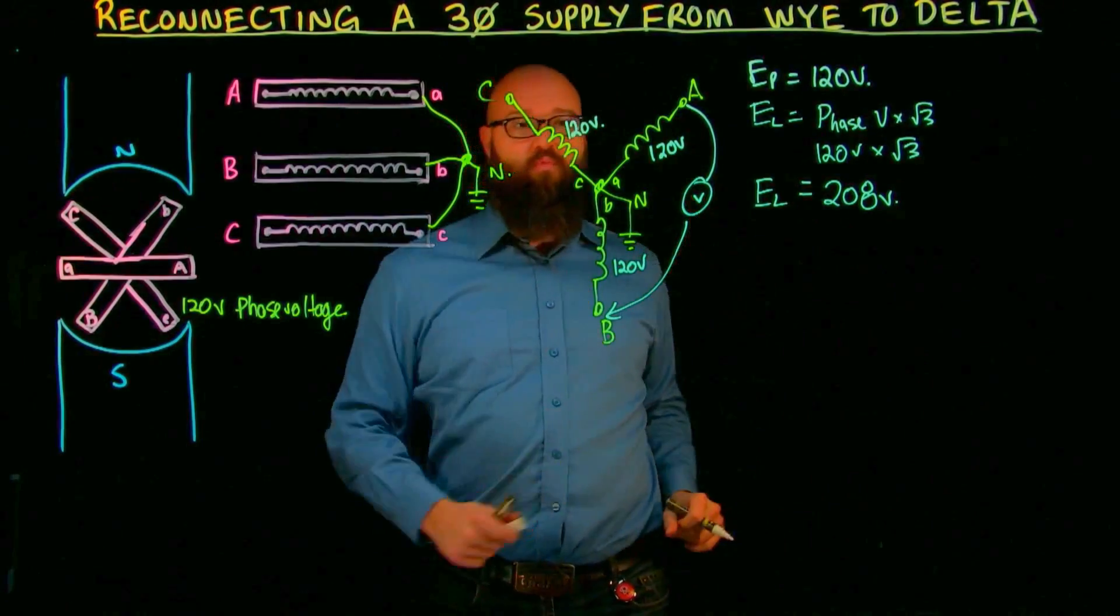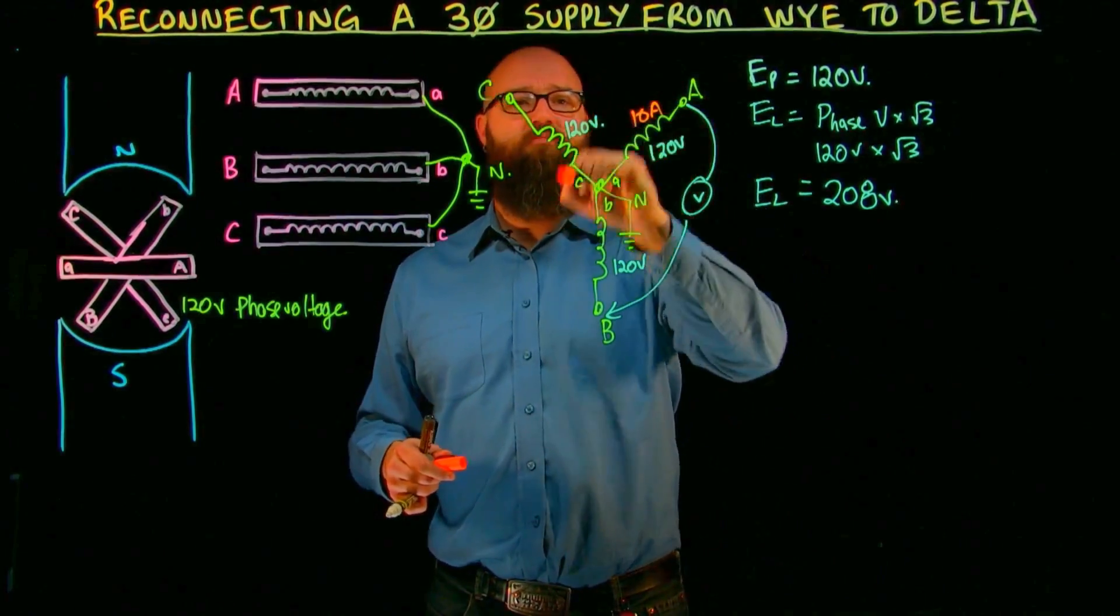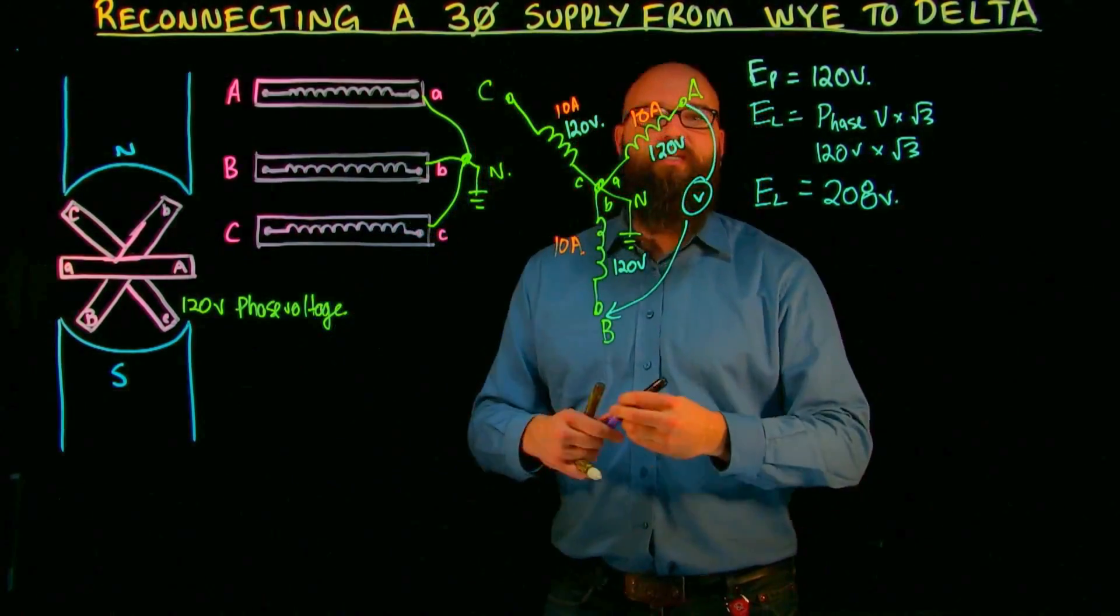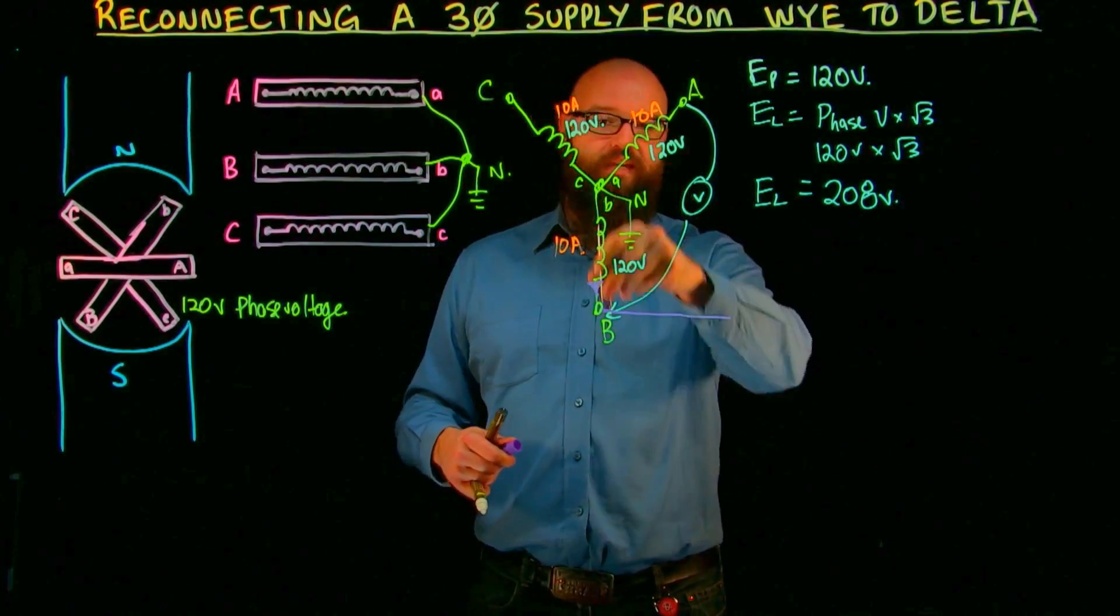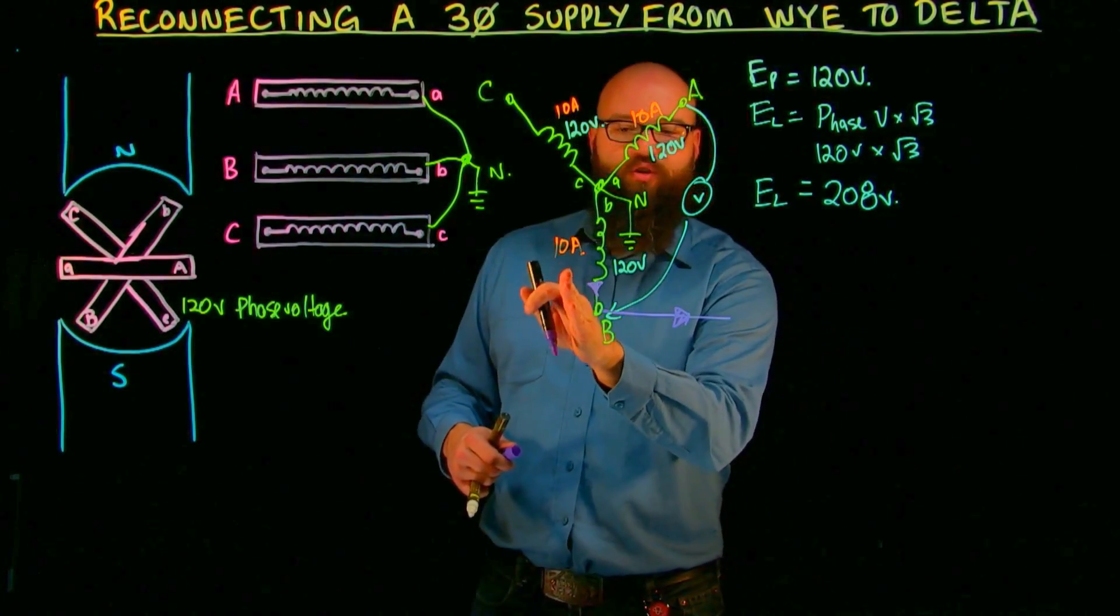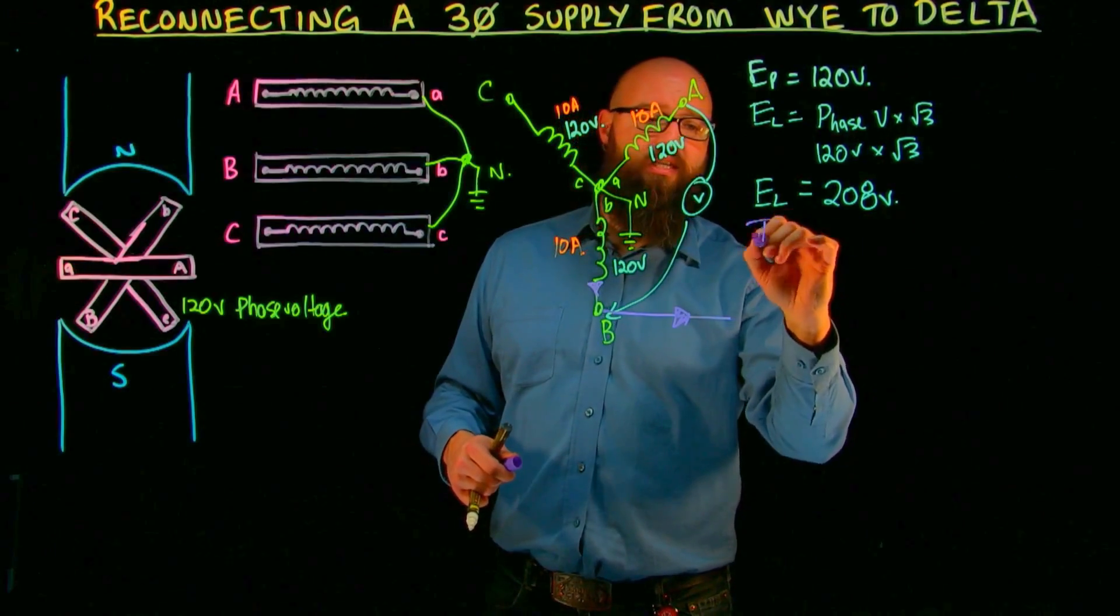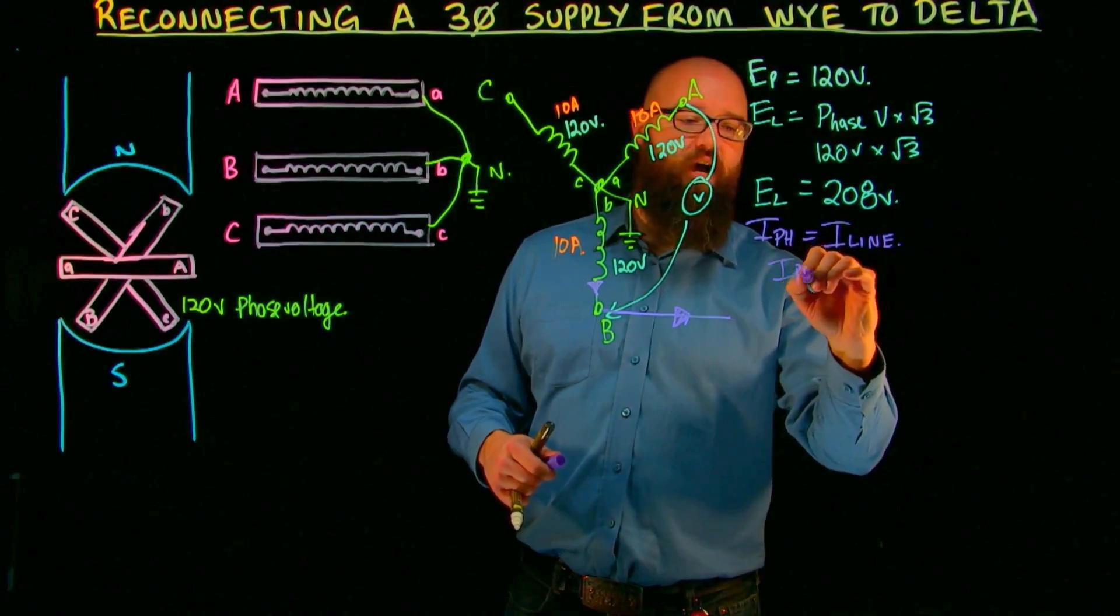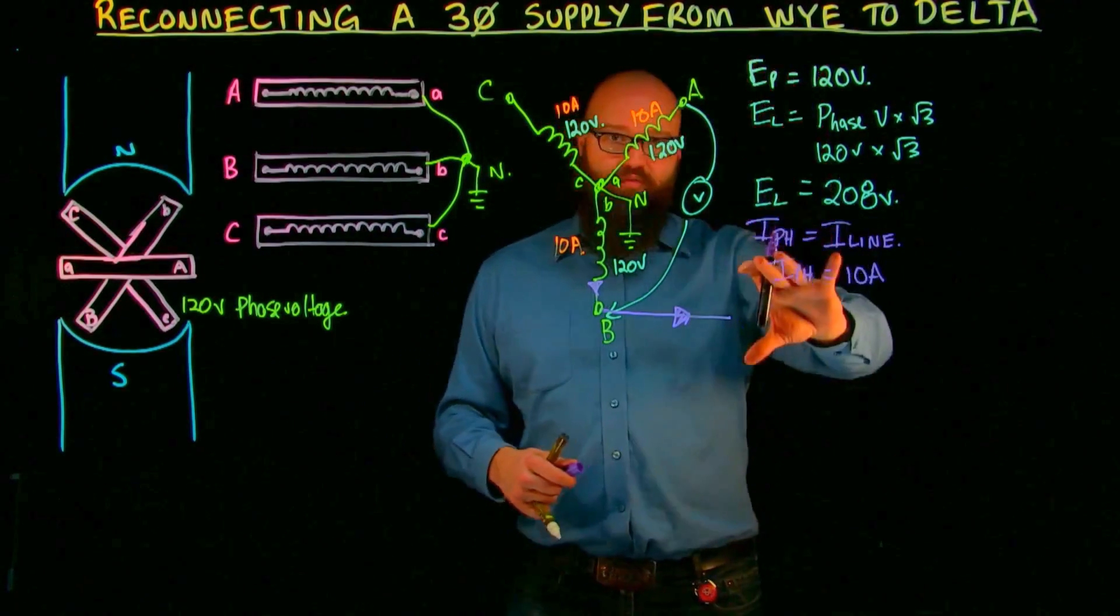So that's our Y connected system right now. Let's say for example, these lines were drawing 10 amps, just to keep the numbers simple. Now, if we look at the way these are connected, we'll focus on phase B here. If I have 10 amps leaving this coil right here out to whatever my circuit is, we can look at my phase current is going to be the same as my line current. And that's one thing we can say for sure about a Y connected system, is that I phase equals I line. In this case, I phase equals 10 amps, which would also be equal to our line current as well.